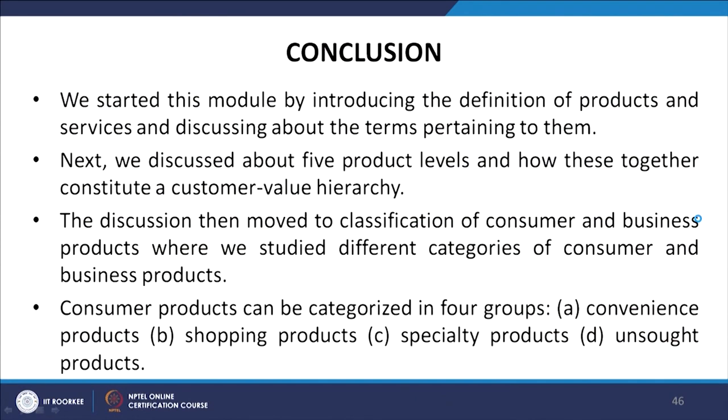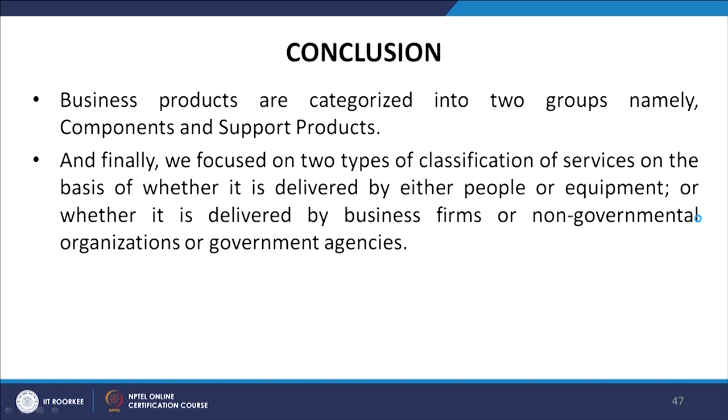To conclude, we started this module by introducing the definition of products and services and discussing the terms pertaining to them. Next, we discussed the five product levels and how together they constitute a customer value hierarchy. The discussion then moved to the classification of consumer and business products, covering four categories of consumer products — convenience, shopping, specialty, and unsought — and two categories of business products: components and support products. Finally, we focused on two types of service classification: by people or equipment, and by business firms, non-profit organizations, or government agencies.